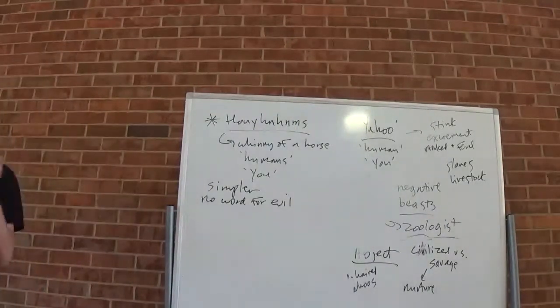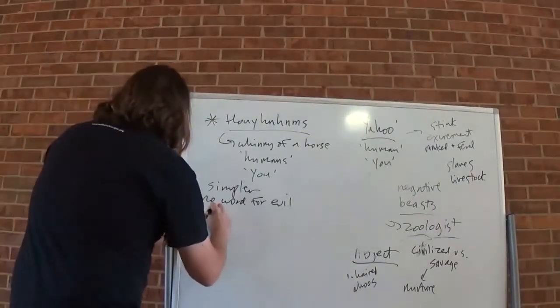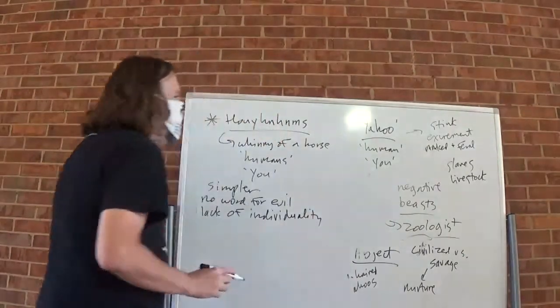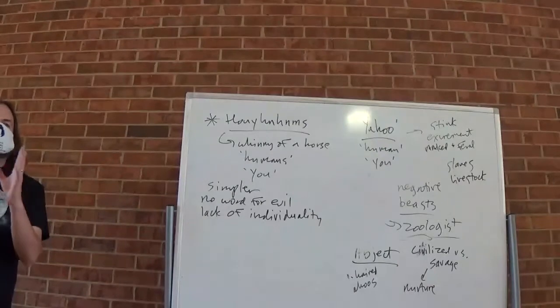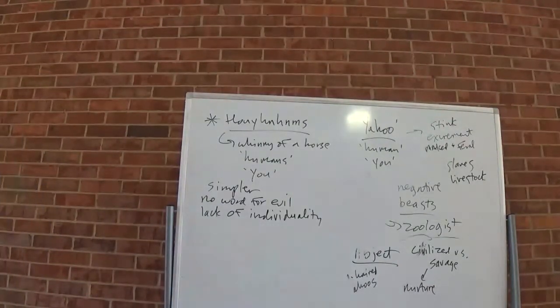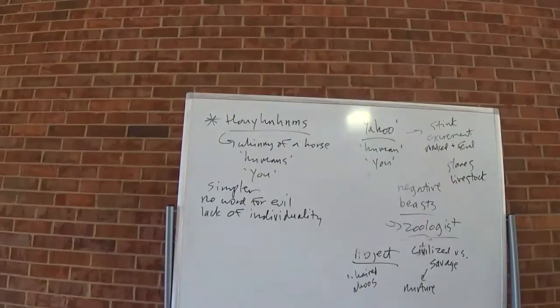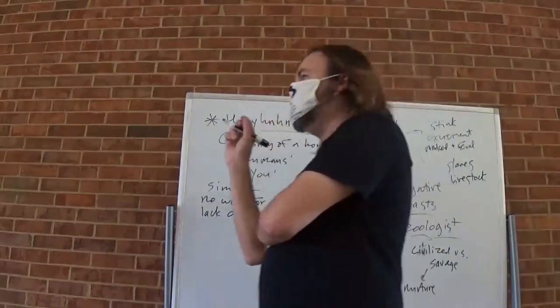There also seems to be a sort of caste system based on color. But there is generally speaking, kind of lack of individuality. Even when they differ in their opinions, as we'll get to in a moment, they usually don't differ that vehemently. I'm not certain the extent to which Swift would have been all that familiar with Asian cultures, in particular. So I can't really speak to that. But I think that what he is playing here is something closer to a kind of philosophical. What is the principle by which all Houyhnhnms claim to live? They don't speak a lie.